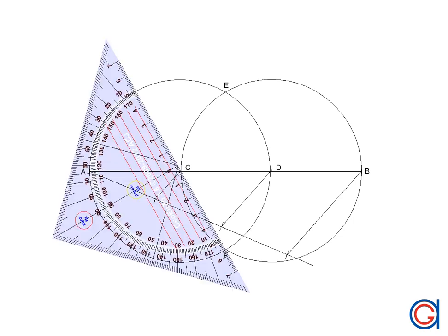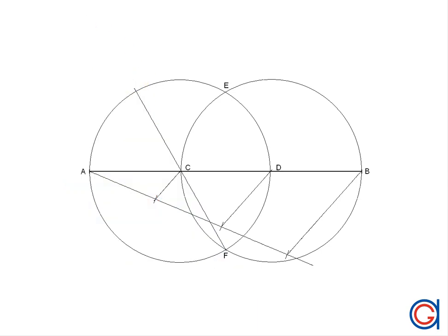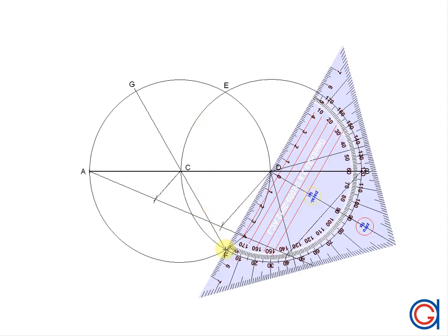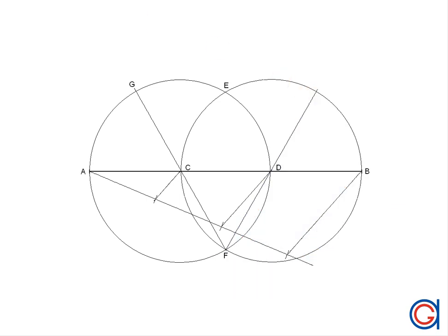Now we are going to draw a line starting from point F going through point C elongating until it cuts the circle at a new point which we will call G. And continuing we will draw a line from point F through point D until it cuts our circle at a new point which we will call H.